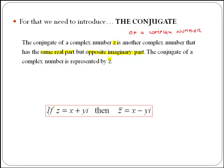So in general, if we have z is equal to x plus yi, which is the Cartesian form of a complex number, then the conjugate of z, z bar, will be a complex number with the same real part but opposite imaginary part. So rather than plus y, we'll have minus y.